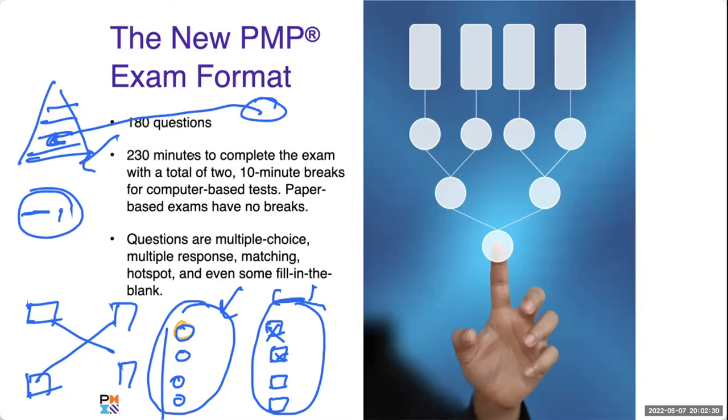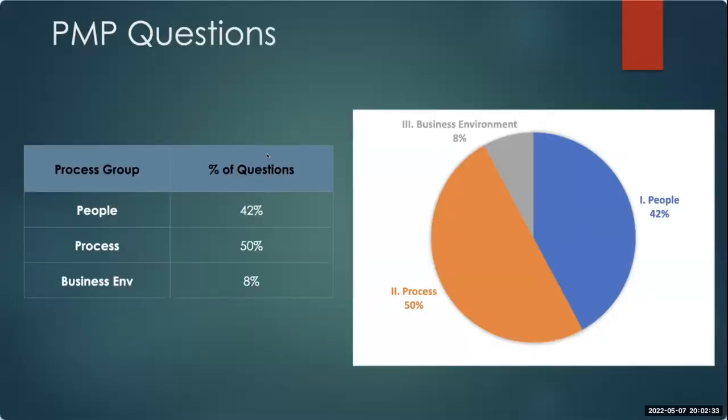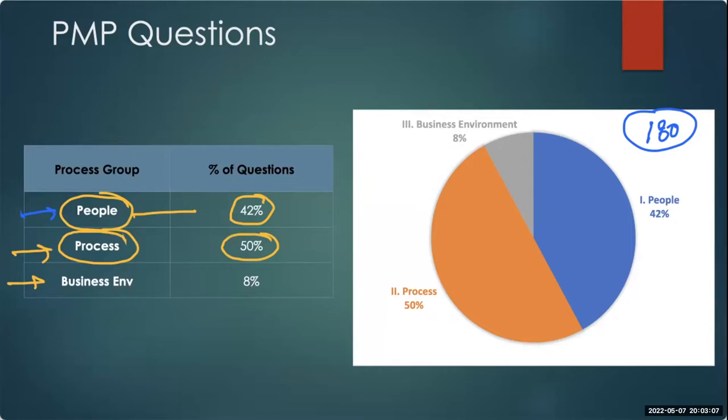The exam constitutes 180 total questions. These 180 questions come from different domains. I'm going to talk about domains later. These domains are: People, which is how do you manage people, 42 percent of the questions. Process, how do you really do XYZ tasks, 50 percent of the questions. How do you manage cost, procurement, all those questions are 50 percent of the total questions.